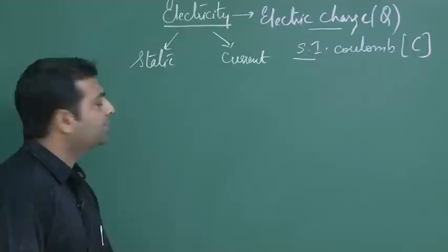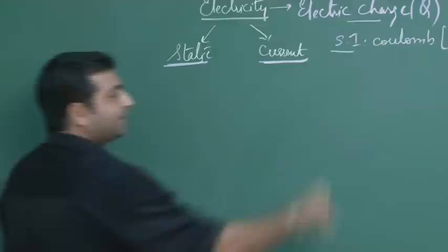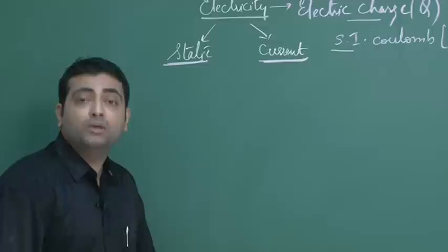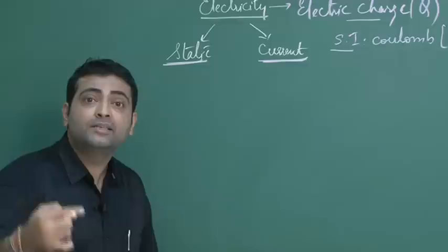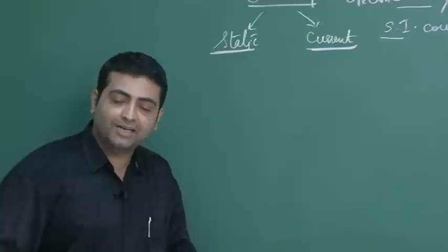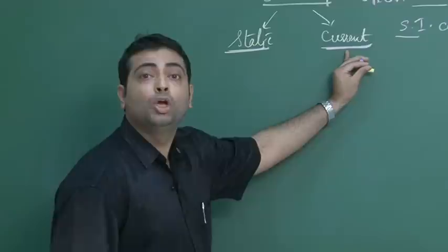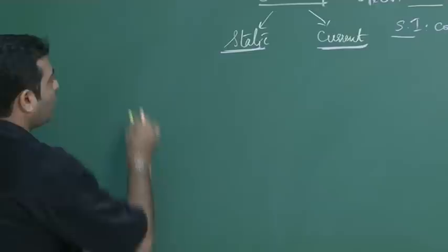This electric charge can be considered to be at rest, or this electric charge can be considered to be in motion. If I speak about the word static, that means we are dealing with studies related to electric charge at rest. But when speaking about current electricity, we are studying electric charge in motion. So the word static stands for stationary, but the word current stands for motion.